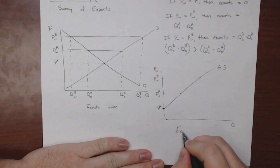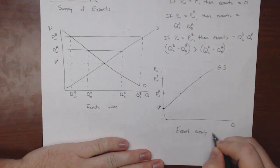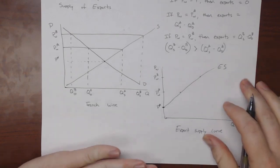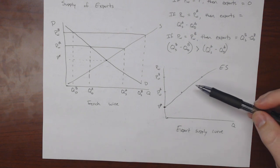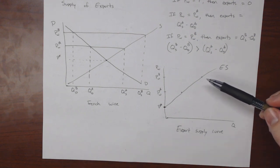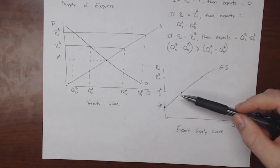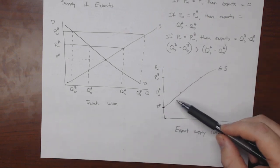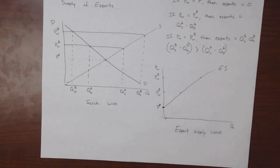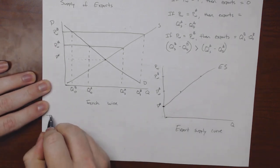The export supply curve is upward sloping, reflecting the idea that if you are an exporter of a good, the world price is above your domestic equilibrium. If that world price increases, you want to increase your exports. A generalizable equation: import demand equals quantity demanded minus quantity supplied; export supply equals quantity supplied minus quantity demanded.